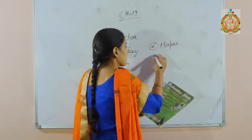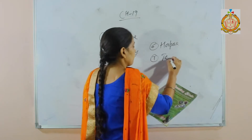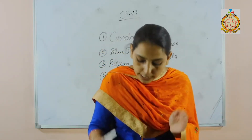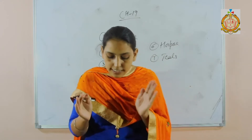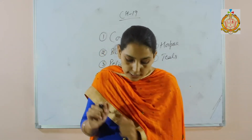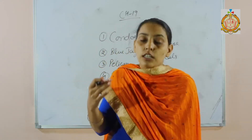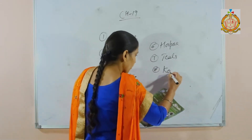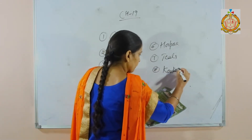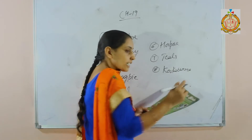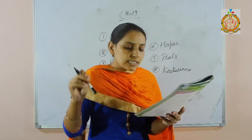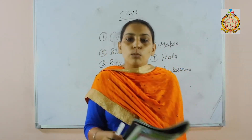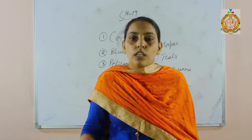Next is the teal. These are small dabbling ducks that show bright green wing patches in flight. The last one is the kookaburra. It is best known for its call which sounds like echoing human laughter.